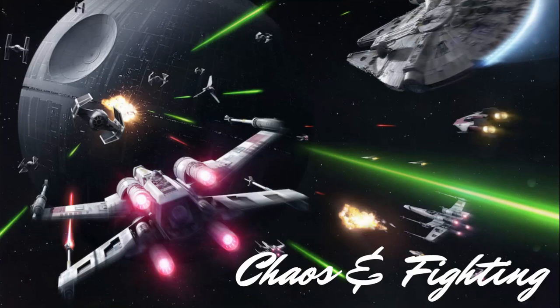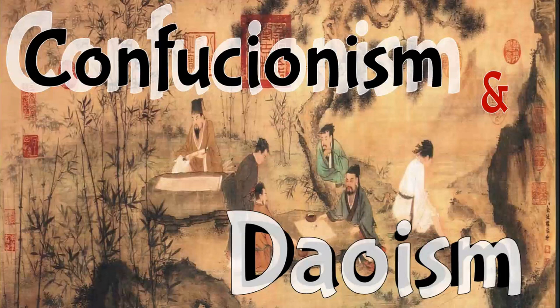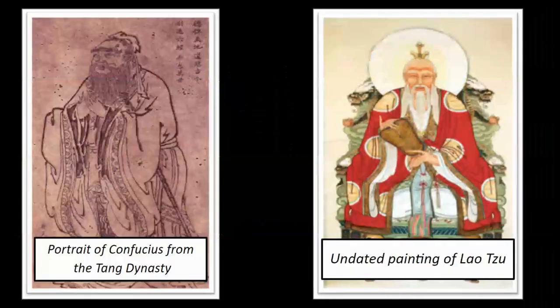We have chaos and fighting — something needed to happen. In response, we have two philosophies: Confucianism and Taoism. Confucianism was started by a man named Confucius. Taoism was started by a man named Lao Tzu. The big difference: Confucianism preached things like duty, honoring those around you — relationships between kids and parents, teachers and students, bosses and workers, friendships — and respecting and obeying rules.